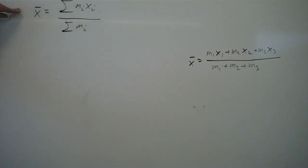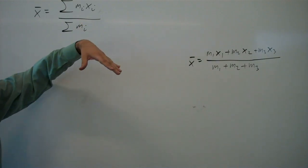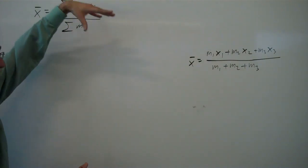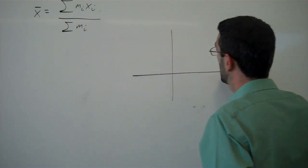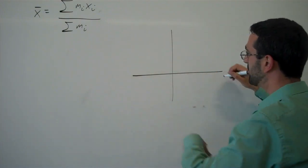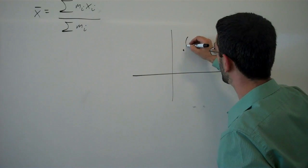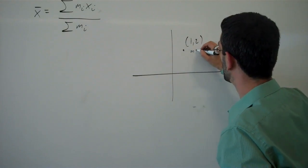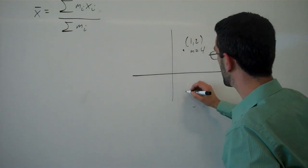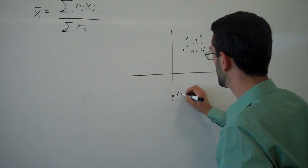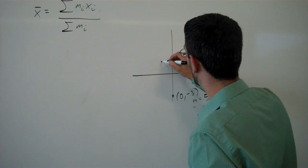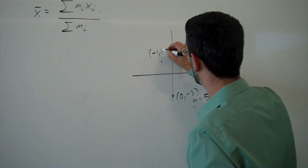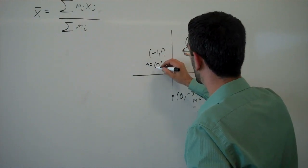Now, this is the general idea for the x center of mass, and then if we turn things sideways, or if we did our calculations the other direction, and we imagine that we had points out in the plane. So instead of along a number line now, maybe we have the point (1, 2) with a mass of 4 kilograms, the point (0, -3) with a mass of 5 kilograms, and the point (-1, 1) with a mass of 10 kilograms.